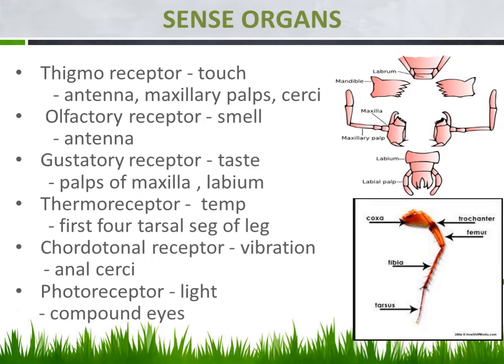The next one is the chordotonal receptor, which is responsible for receiving vibrations — both vibration in the air and vibration on land. This is present in the anal cerci. The last sense organ is the photoreceptor, which is responsible for receiving the sense of light, and it is present in the compound eyes located in the head region.